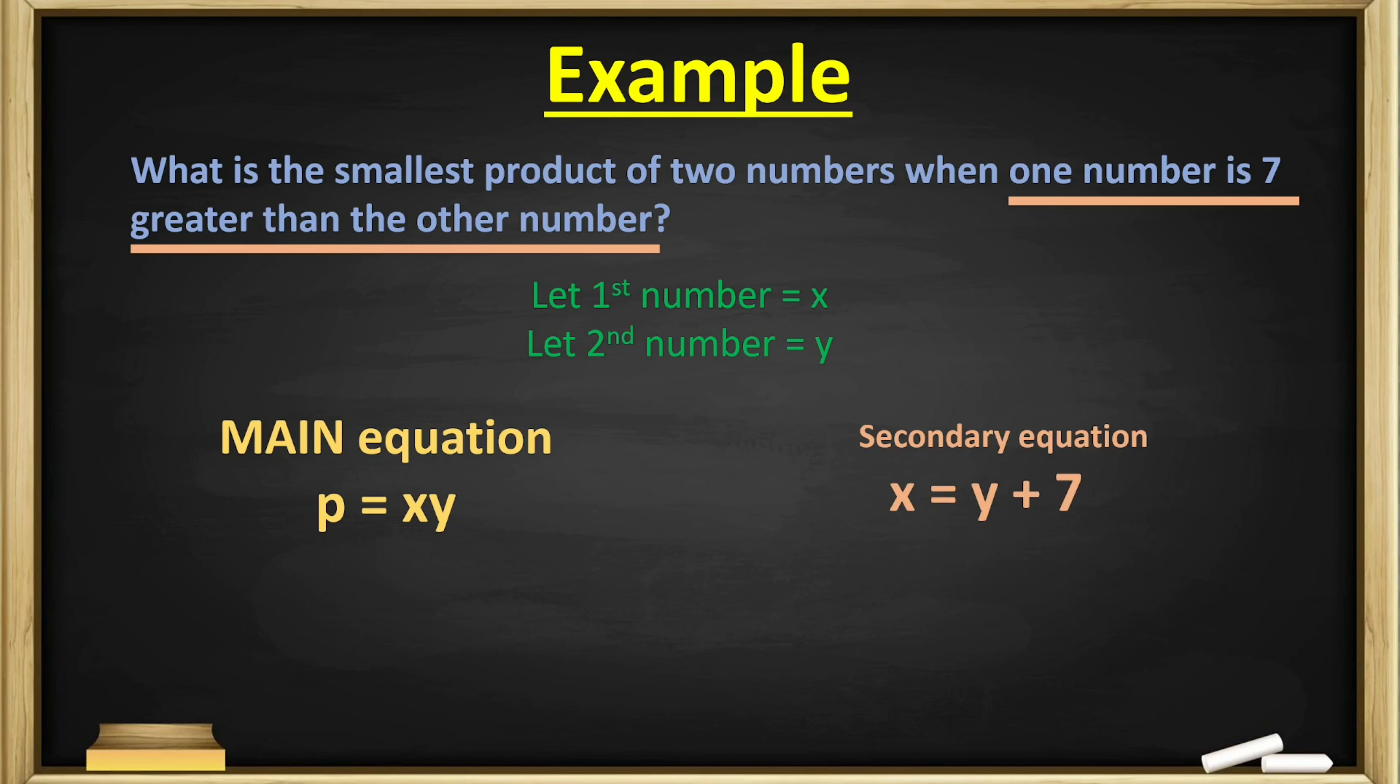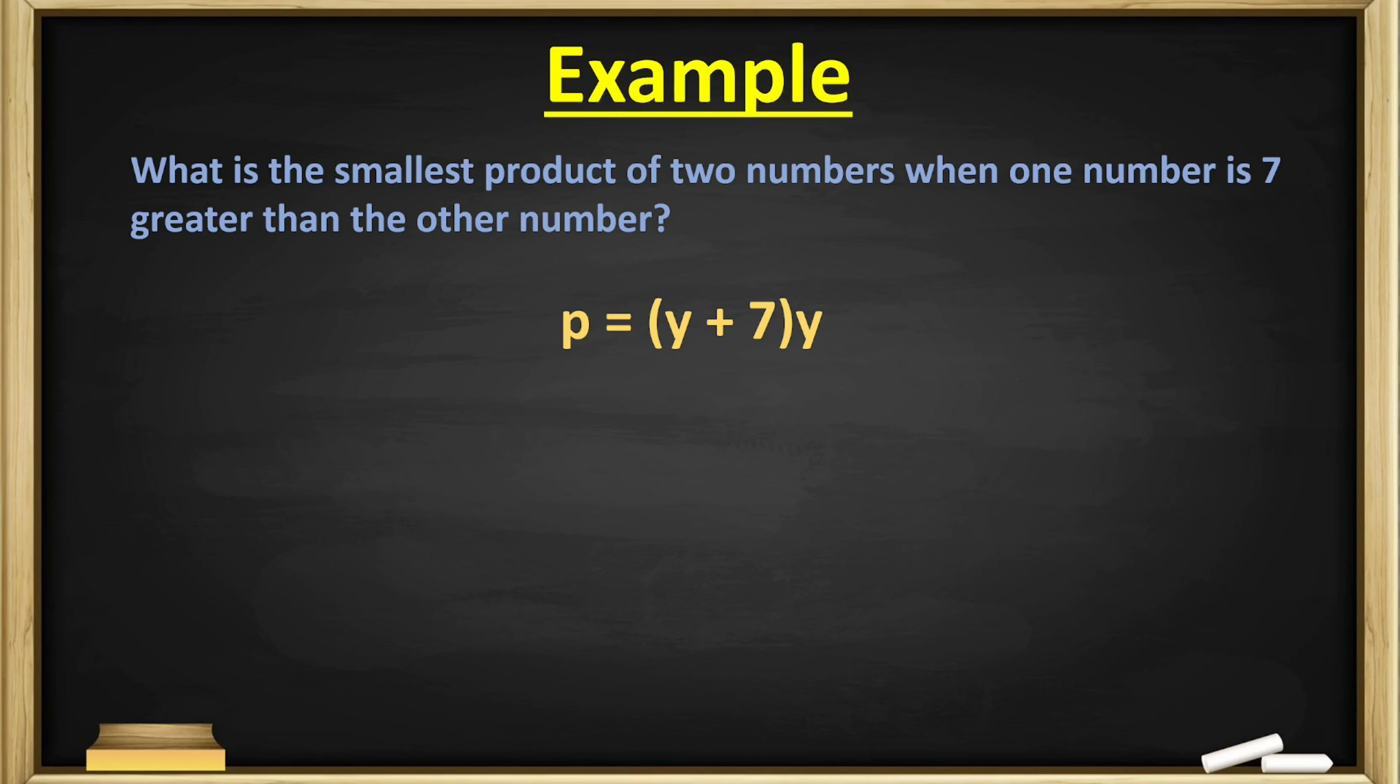Once we know this, we need our secondary equation. They have to give us a relationship, and there it is: one number is seven greater than the other number. So for our secondary equation, we can say that x = y + 7. And now we can substitute the y + 7 into the x in the main equation. So now our main equation looks like this, and we can distribute the y in to simplify a little bit.